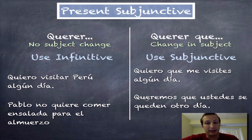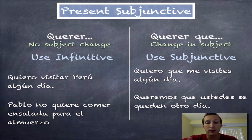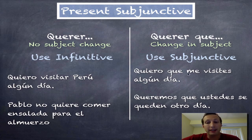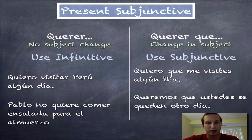Another example: in the first part, the subject is 'we,' and in the second it's 'ustedes,' so again it's a change of subject. 'Queremos que ustedes se queden otro día' — we want you to stay another day. The construction is something like 'I want that you might visit someday.' It doesn't sound right in English, so that's part of the challenge behind subjunctive, but that's more or less the literal translation.